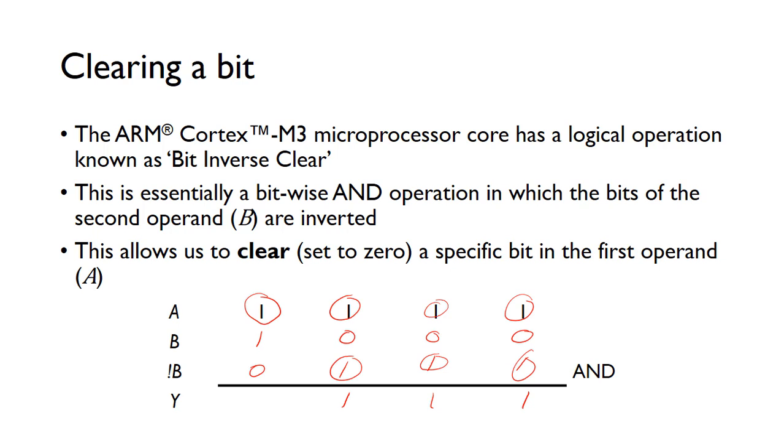NOT B is zero, so one AND zero gives us zero. In this case, our answer Y is 0111. That's the same as A, apart from this bit has been cleared. That bit was cleared because we put a one in this column in B.